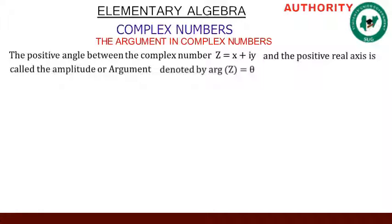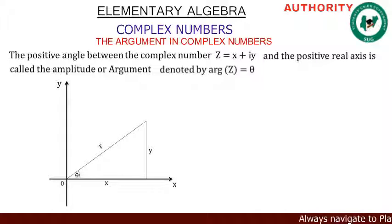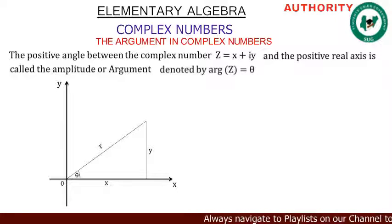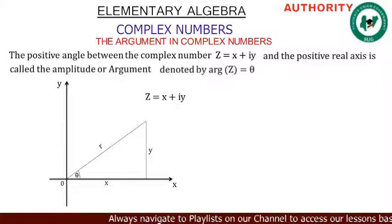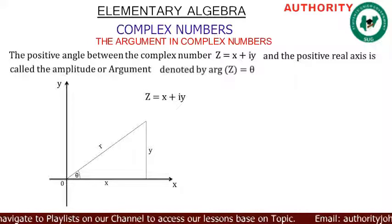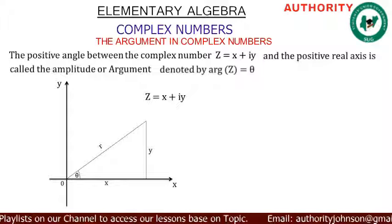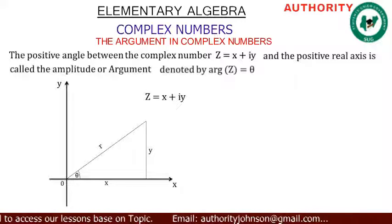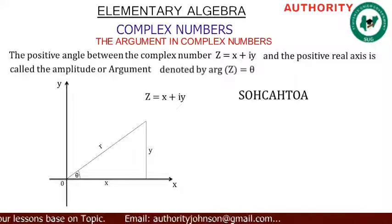In our diagram, we have our x, our y, our r, and our θ. We know z to be x + iy. Here we don't know r and we don't know our angle θ, but we know x and we know y. So what are we going to use to find our θ?